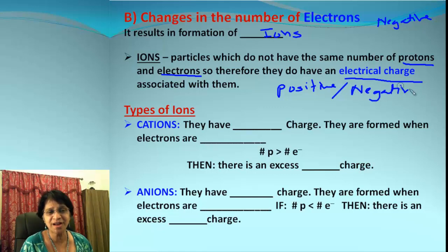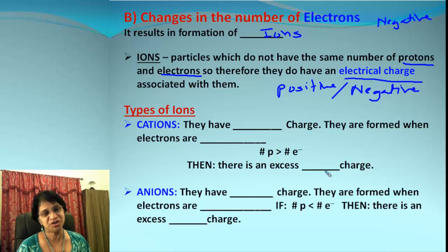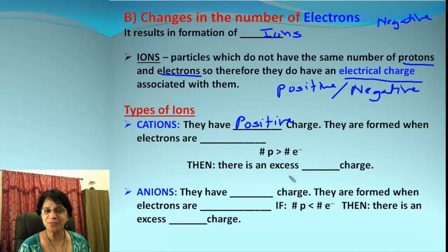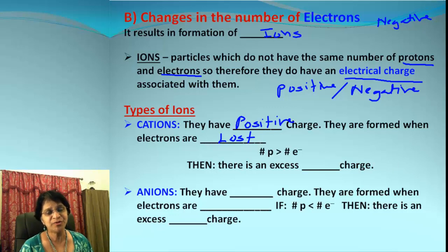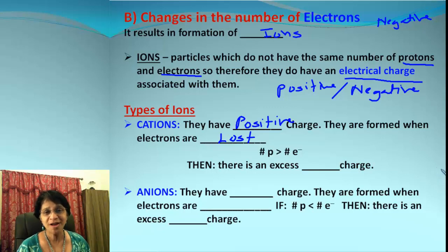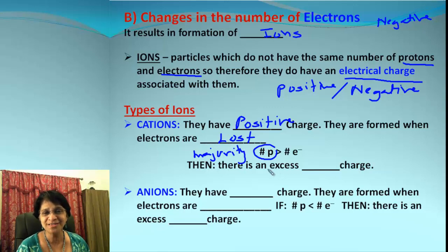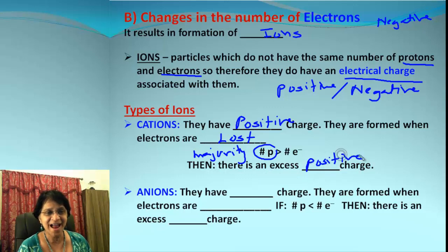There are two different types of ions. One is called a cation and the other is called an anion. Cations have a positive charge, and they are formed when electrons are lost. In an atom, we have protons equal to electrons. If some electrons are lost, protons are in the majority, so the positive charge of protons becomes the major charge — therefore, there is an excess positive charge and cations are positive.